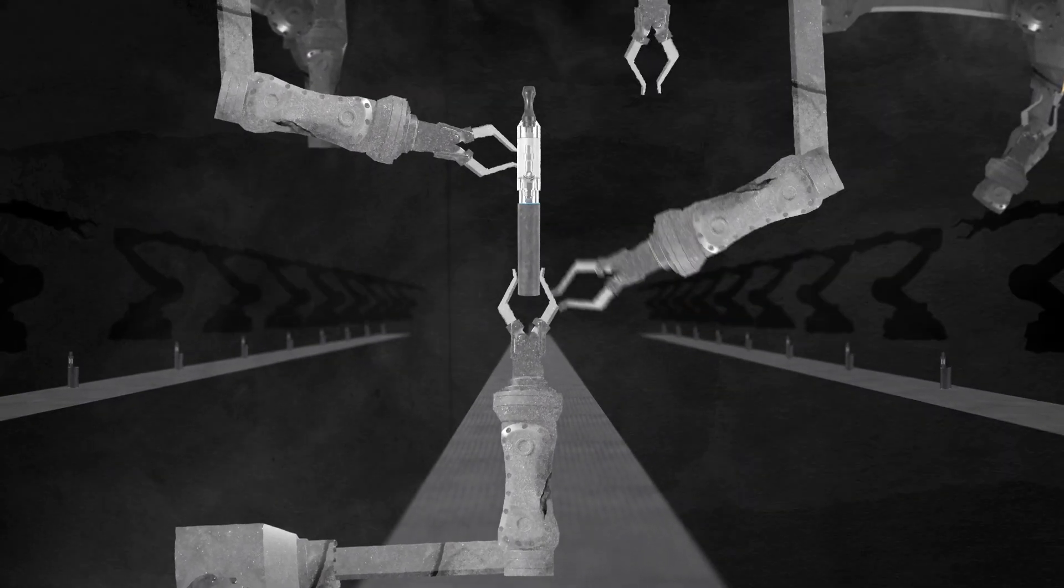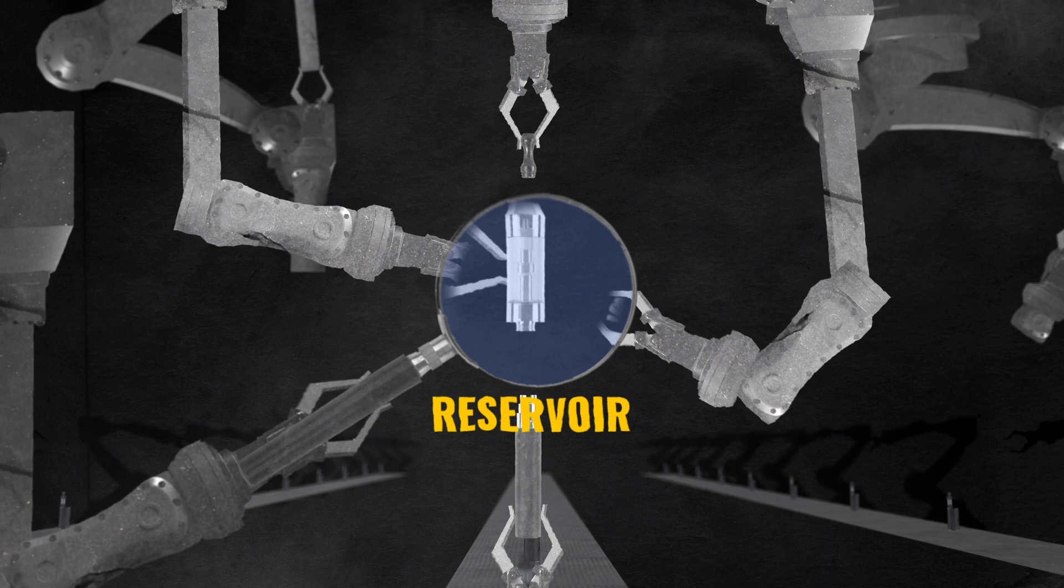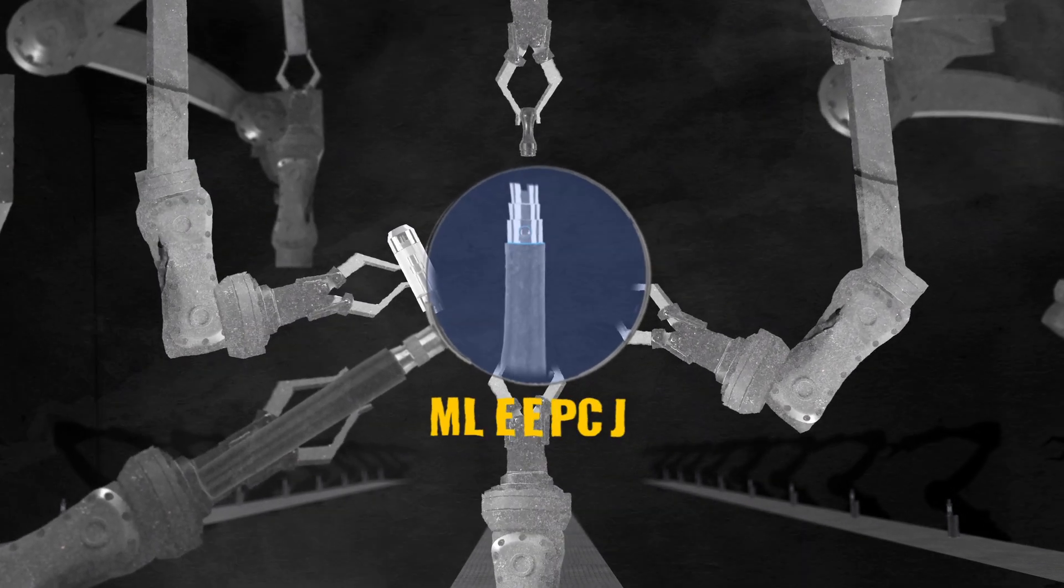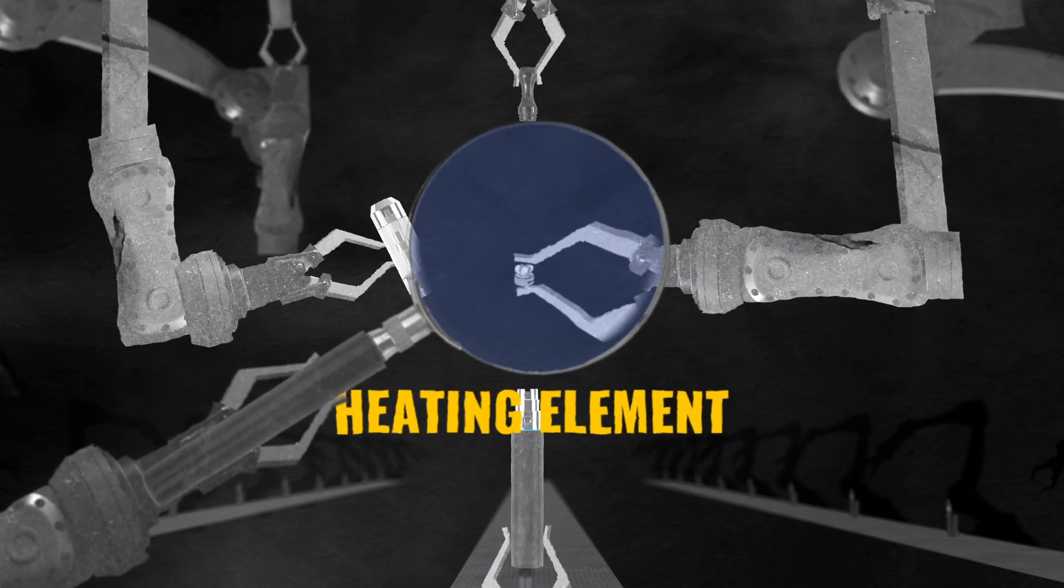The devices usually have four main parts: a reservoir that holds e-liquid, a battery, a heating element, and a mouthpiece.